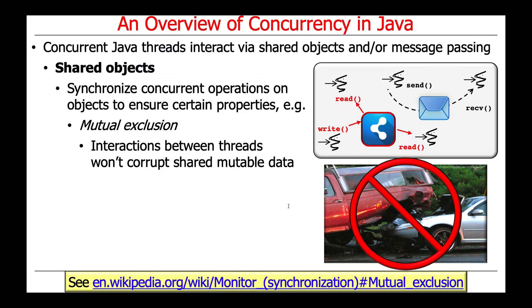A key concept with shared objects is mutual exclusion: only one thread at a time can access the critical section — the shared data — to avoid race conditions. A good analogy is the restroom on an airplane: it's either occupied or vacant. If it's occupied you have to wait; if vacant you go in, shut the door, and it becomes occupied. One in, one out — mutual exclusion.